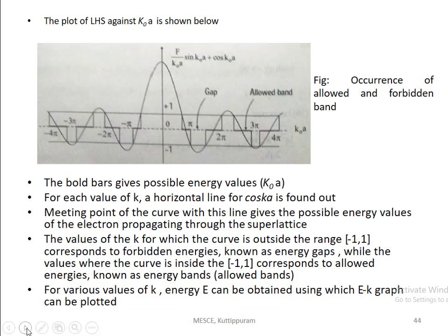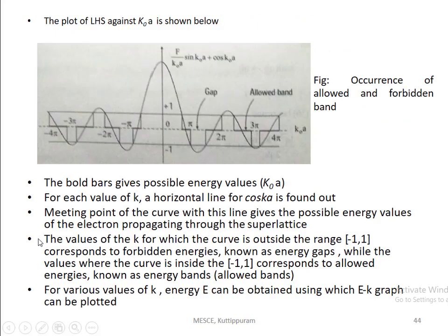This can be explained using a plot where the left-hand side is plotted against k₀a. In that figure, the bold bars give possible energy values of k₀a. For each value of k, we draw a horizontal line for cos(ka). The meeting point of the curve with this line gives the energy values of an electron in a superlattice. If the curve value is outside the range of +1 to −1, that area is termed as the forbidden energy gap. If the curve is inside the range of +1 to −1, that region is termed as the allowed energy band.